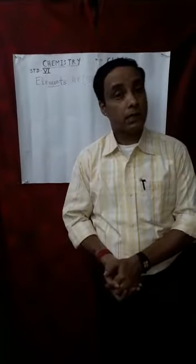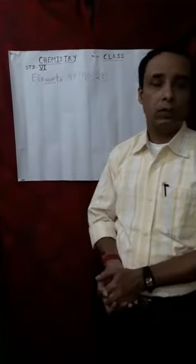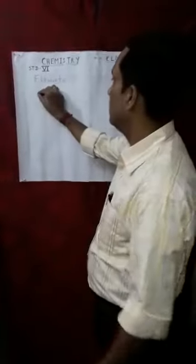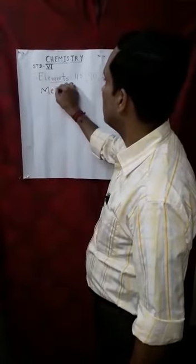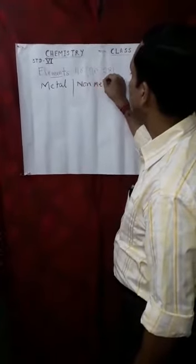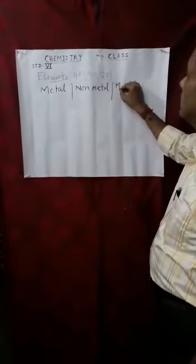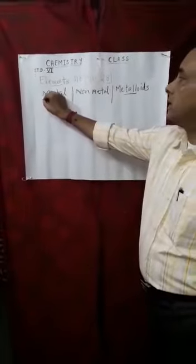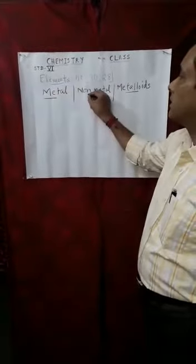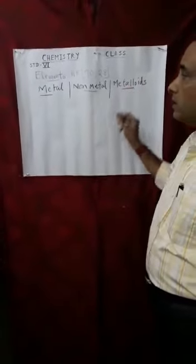Elements are further classified into metals, non-metals, and metalloids. So the three classifications are: first, metals; second, non-metals; and third, metalloids.